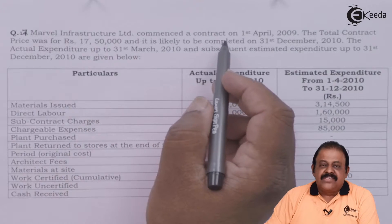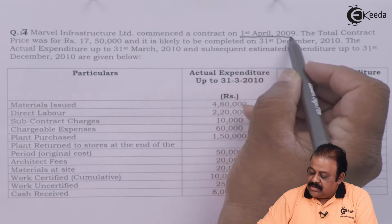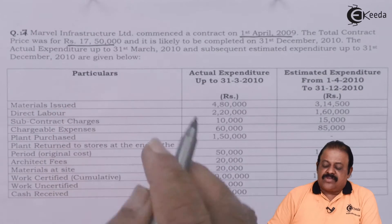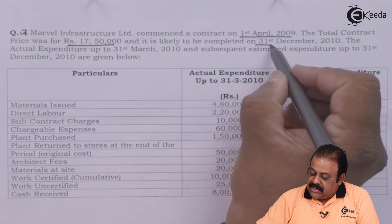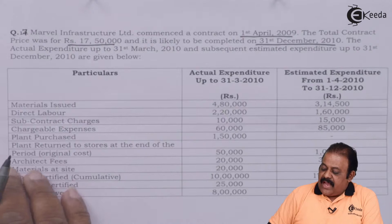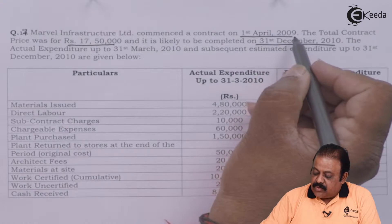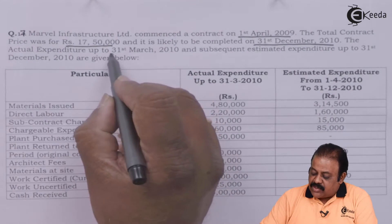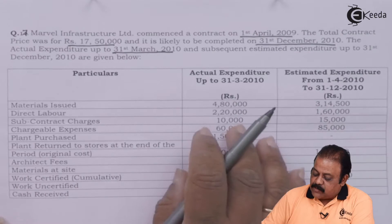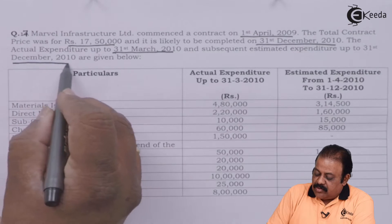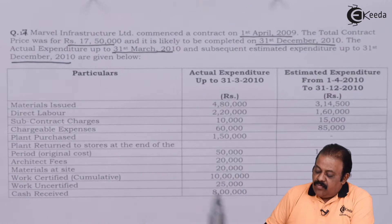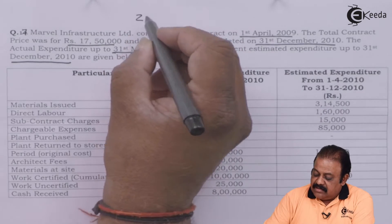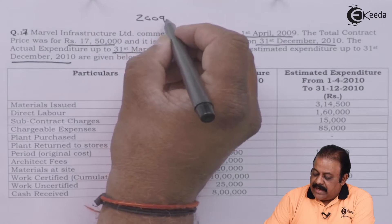Marvel Infrastructure Limited commenced a contract on 1st April 2009. The total contract price is ₹17,50,000 and it is likely to be completed on 31st December 2010. The actual expenditure up to 31st March 2010 and subsequent estimated expenditure up to December 2010 are given. We have information for one financial year where actual expenditure are given — that is year 2009-2010.